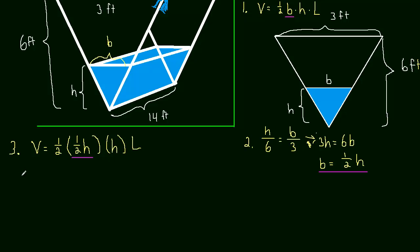And then this is all times the length. And now let's simplify that. So this is equal to one-fourth times, the length is 14, times h squared. Times h squared. Okay. So now we have V in terms of just h. So now we can, we have the relationship of V and h, and now we can figure out what the rate of changes are by just taking the derivative with respect to time.